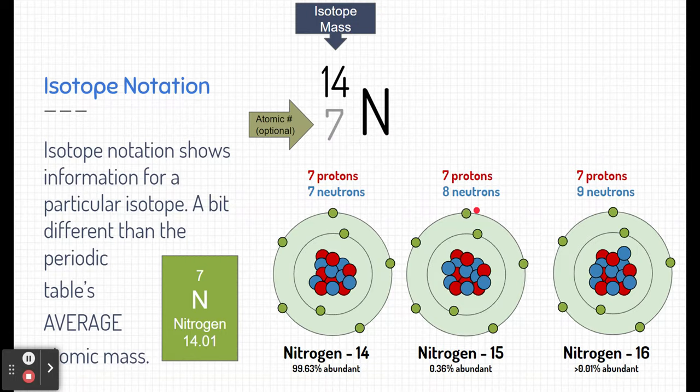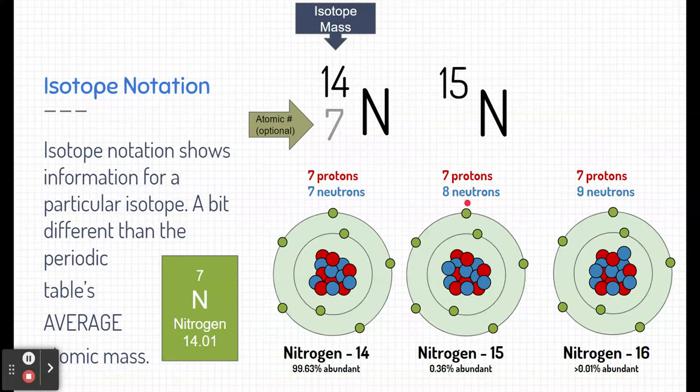So, what would nitrogen-15 look like? Well, we would just put a 15 in the upper left-hand corner. Again, that represents the mass of this particular isotope of nitrogen, and finally, nitrogen-16 would look like that.